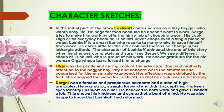The character of Lushkov shines at the end of this story when he changes completely and surprises Sergei. We see a different shade of Lushkov who is proud of his work. He shows gratitude for the old woman, Olga, whose tears forced him to change. Lushkov finally becomes a transformed man. Though Sergei feels that this transformation is a gift from his part, he is absolutely wrong — it is Olga who, by her rare virtue, makes Lushkov completely changed. The next character is Olga, who was the gentle and caring cook of the advocate. She paid motherly affection to the beggar. Pity and concern were the emotions she had for the miserable vagabond.